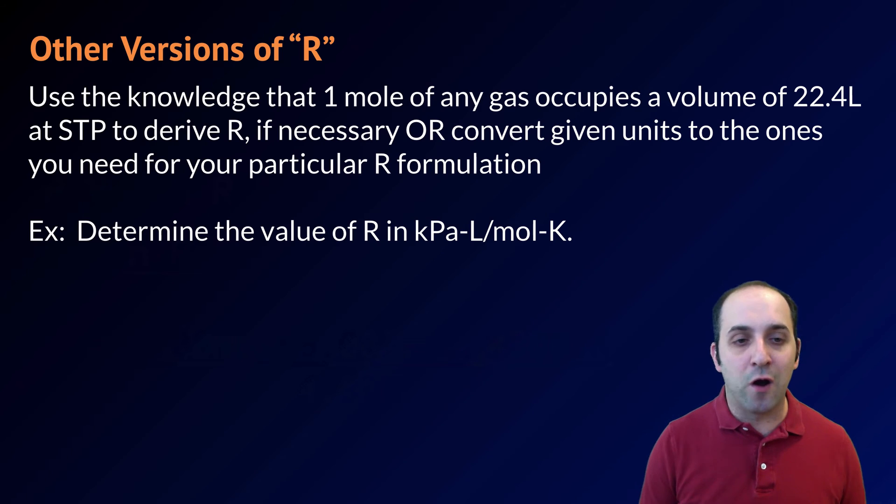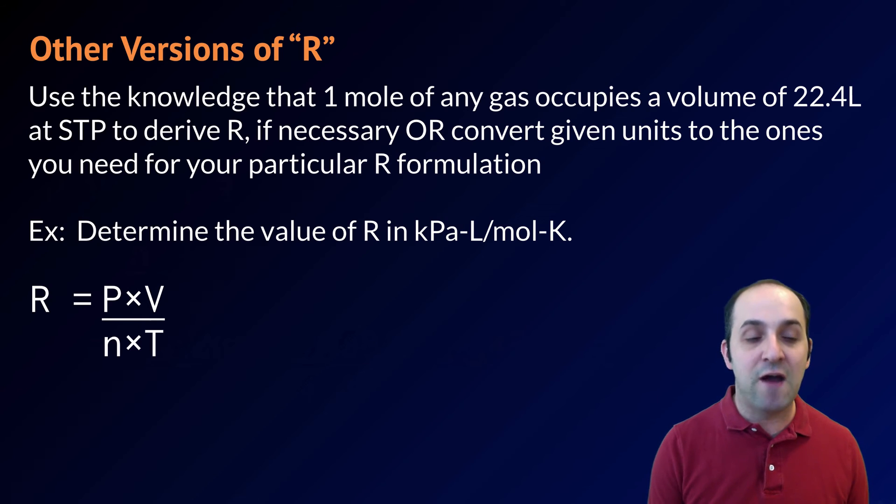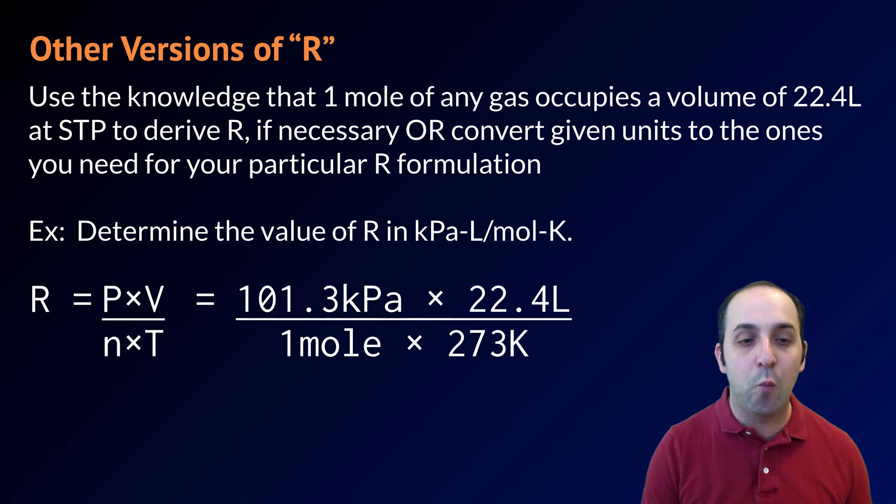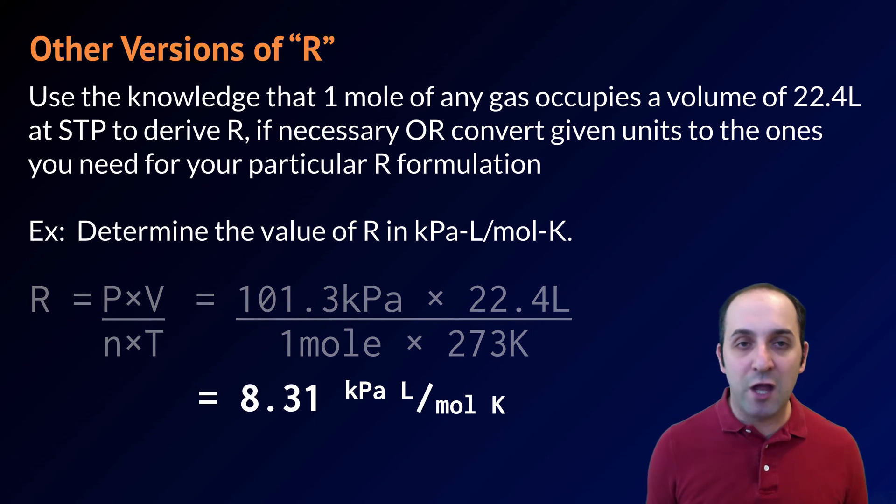But in case you want to be a chemistry superstar, let's figure out how to determine the value of R in different values than the one you were given. Let's figure it out in kilopascal liters per mole Kelvin. In order to do this, R is still going to be equal to P times V divided by n times T. But now we have different values. Since we're talking about kilopascals, it's going to be 101.3 kilopascals, that's standard pressure in kilopascals, times 22.4 liters divided by 1 mole times 273 degrees Kelvin. But when we do this math, we're going to get a value of 8.31 kilopascal liters per mole Kelvin, a different R value because our pressure is no longer in atmospheres, it's now in kilopascals.